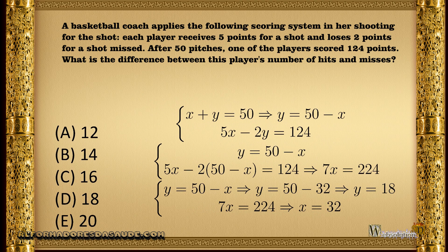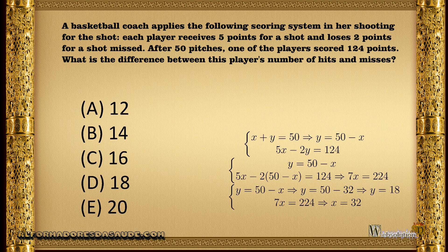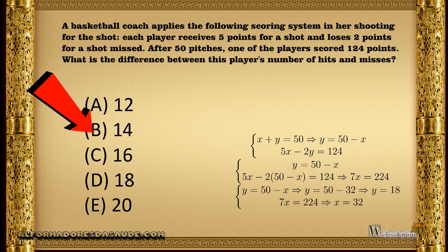So the number of hits minus the number of misses is x minus y, which would be 32 minus 18, which is equal to 14, and the answer would be alternative B.